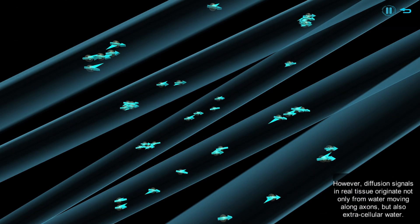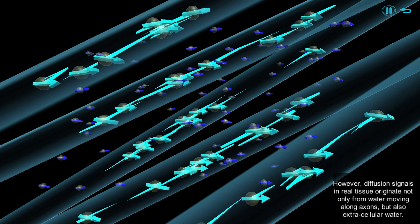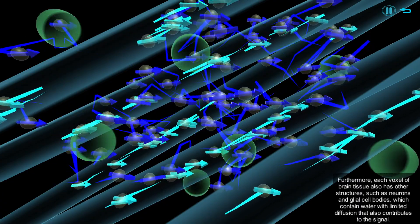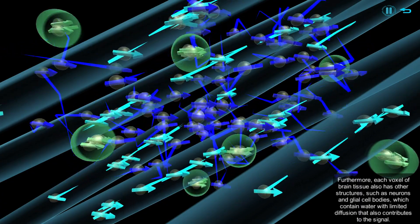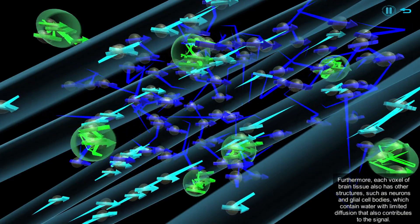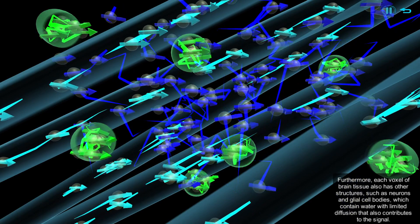However, diffusion signals in real tissue originate not only from water moving along axons, but also extracellular water. Furthermore, each voxel of brain tissue also has other structures, such as neurons and glial cell bodies, which contain water with limited diffusion that also contributes to the signal.